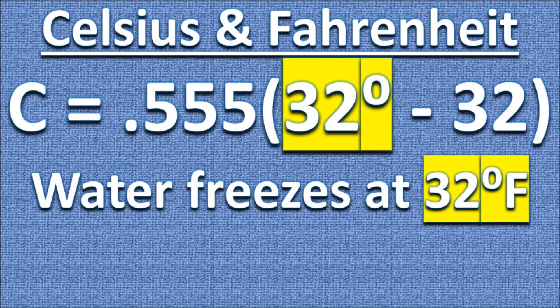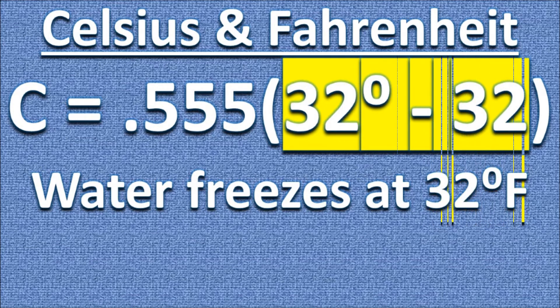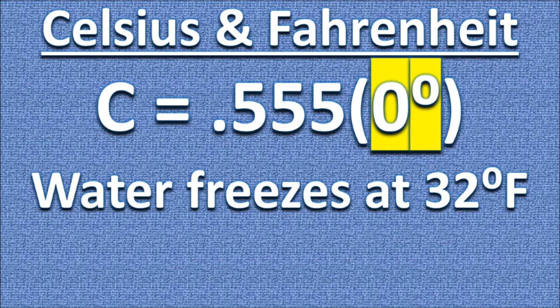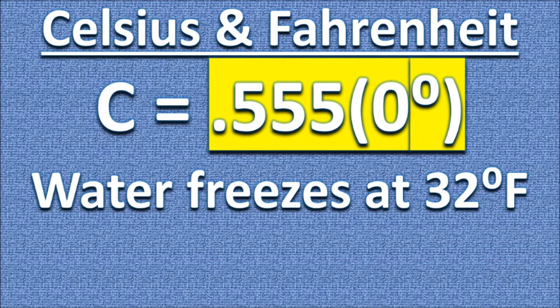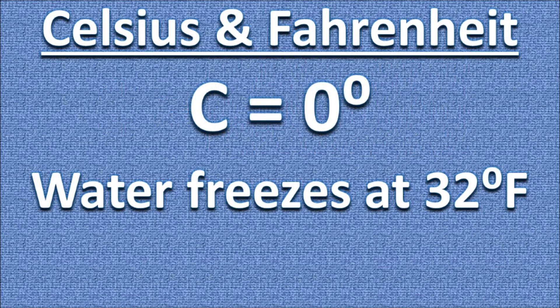Let us plug in 32 degrees for F. Next, subtract 32 from 32, which gives us 0. Next we multiply 0.555 to 0, which gives us 0.